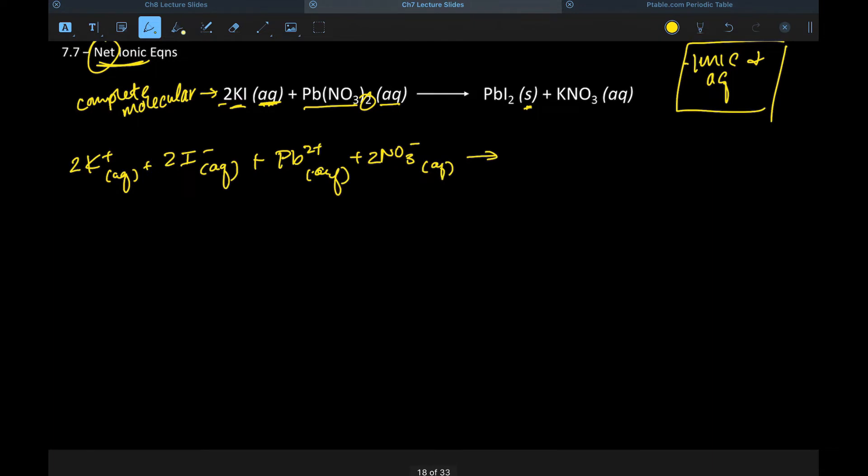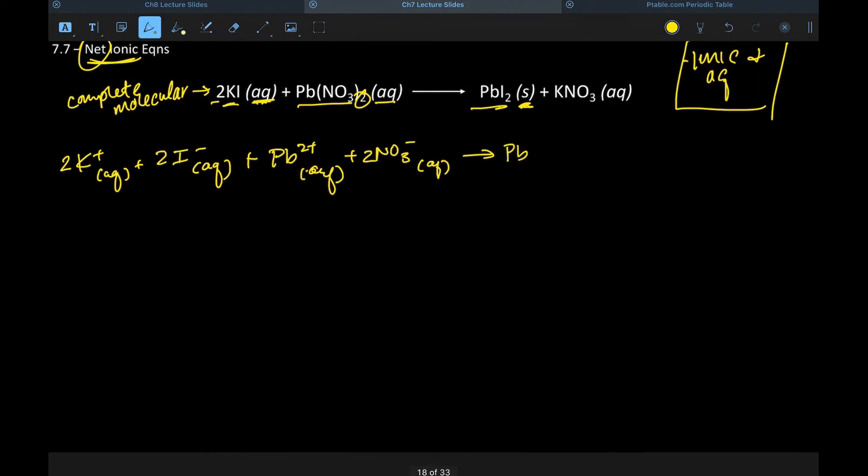And then on my product side, I have ionic but solid. It does not meet both criteria, therefore it does not get dissociated, and we'll just write this as it is. And then we have ionic and aqueous, so this also gets written as its respective, oh, I forgot to put a two here, so two K plus and two nitrates. All right, so now we have our complete ionic.